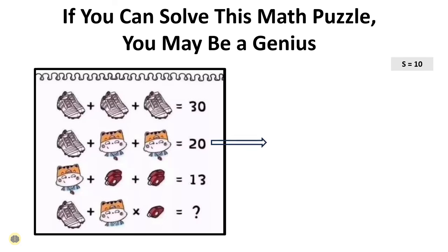Now the second equation is clearer. Substitute the shoe's value for 10, and you will find 10 + C + C = 20. Subtract 10 from each side, so C + C = 10. Each cat must represent the number 5.